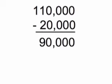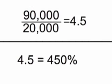So the amount of increase would be $90,000. If you divide that by 20,000, the original price of the car, you get the decimal 4.5. That, converted to a percent, is 450%, which is the amount of increase in the car's worth.